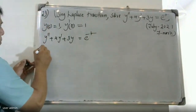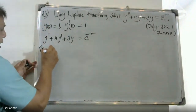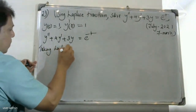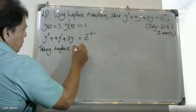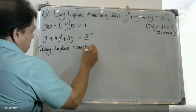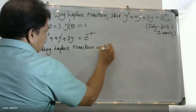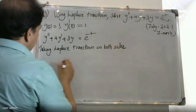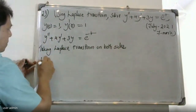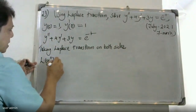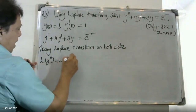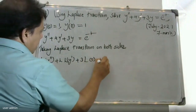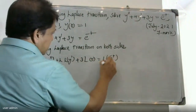Taking Laplace Transform on both sides. We get L{y''} + 4·L{y'} + 3·L{y} = L{e^(-t)}.